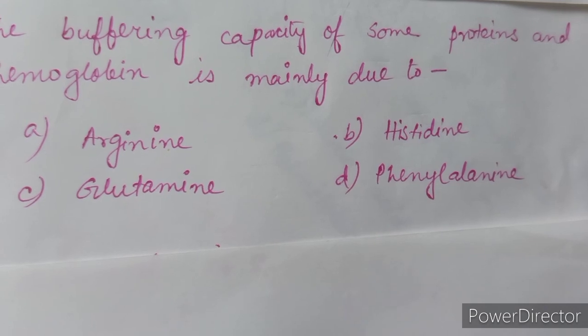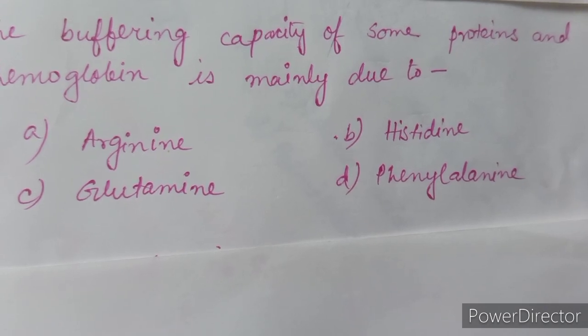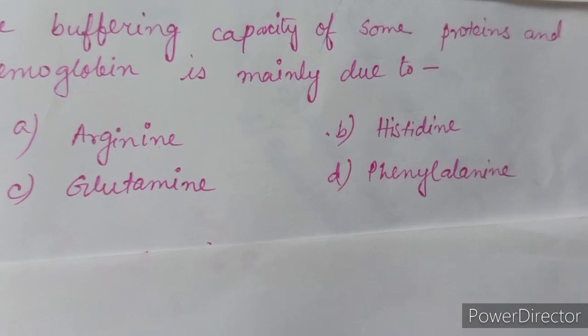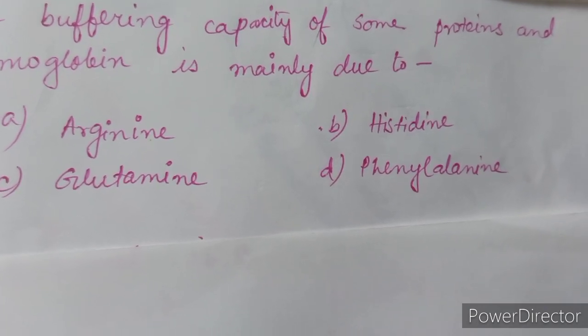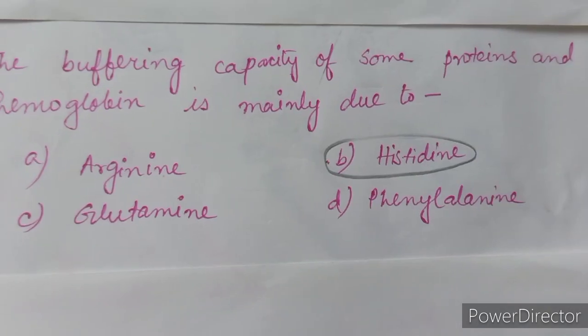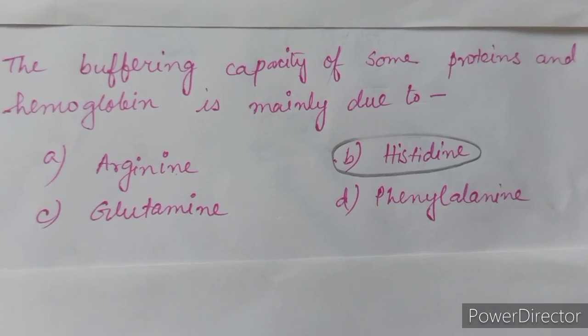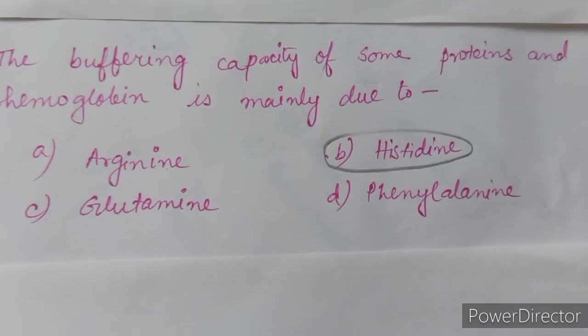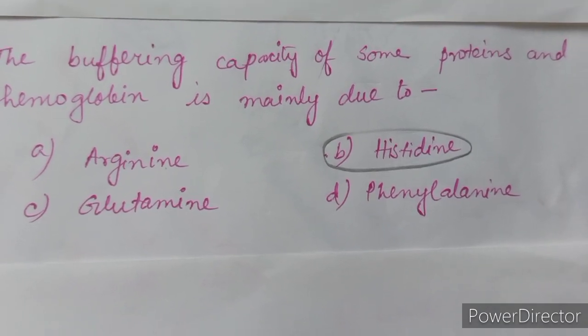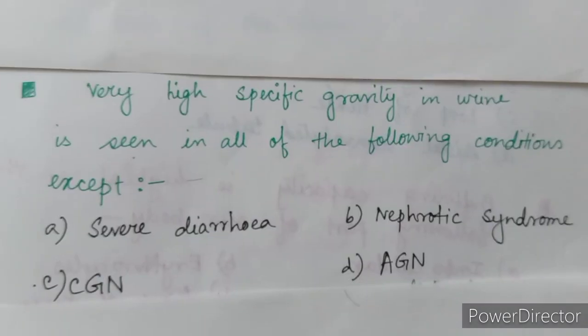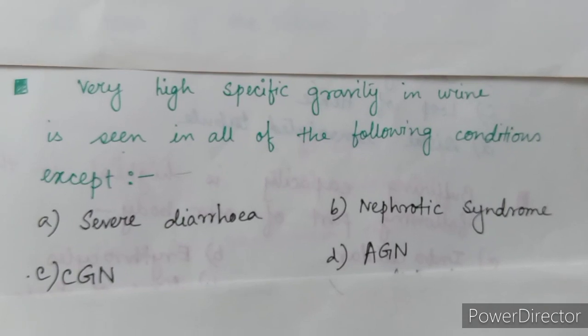Next question: the buffering capacity of some proteins and hemoglobin is mainly due to — option A: arginine, option B: histidine, option C: glutamine, option D: phenylalanine. The correct answer is option B: histidine.